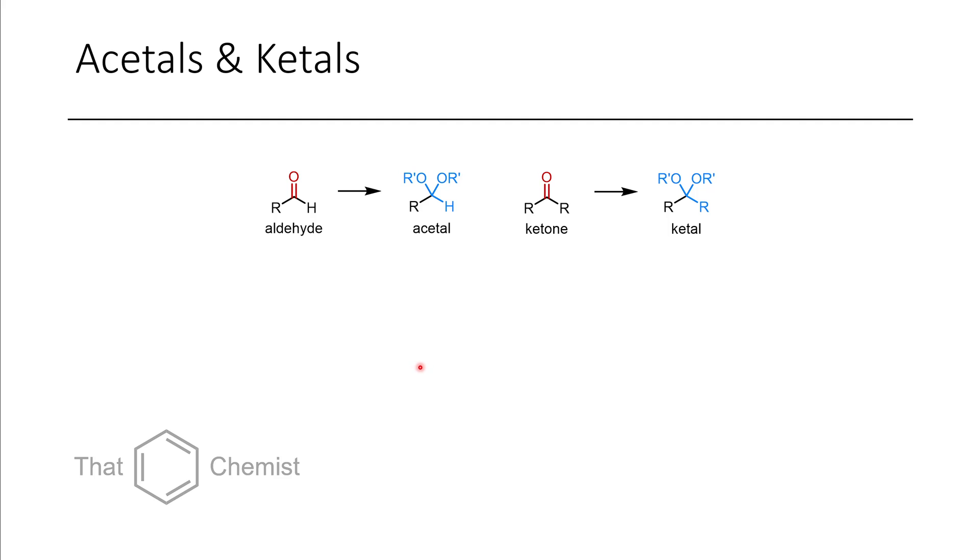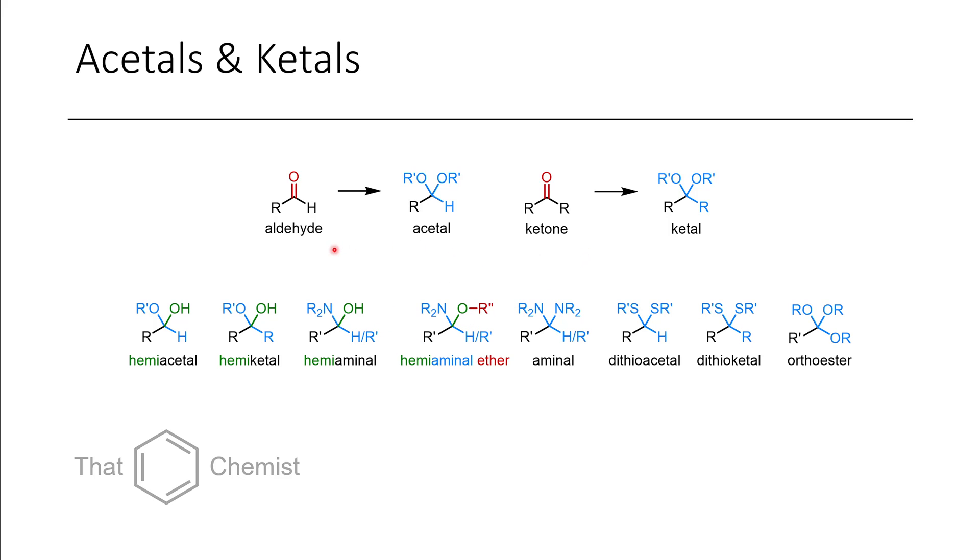So, we'll go through a couple other functional groups that are just useful to know. So, we talked about aldehydes previously. If instead of having a C double bond O, we had two OR groups, this would be called an acetal. The hydrogen is what makes it an acetal instead of a ketal. The ketone here, we have a carbonyl with two R groups. If instead of the C double bond O, we had two alkoxy groups, this would be a ketal. Some other derivatives that are similar to ketals and acetals include hemiacetals, which is instead of an OR, we just have an OH. Here's a hemiketal, which is the same thing as an acetal, just we have an R group instead of an H.